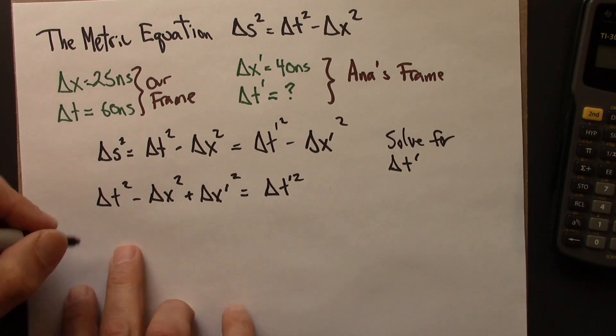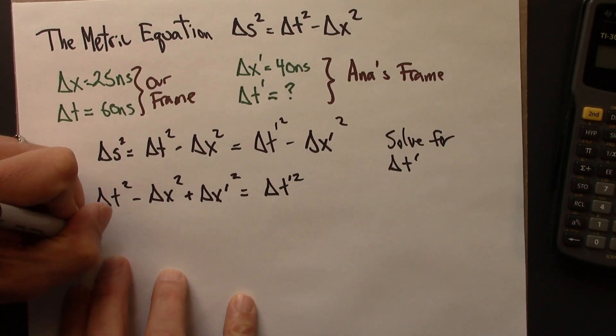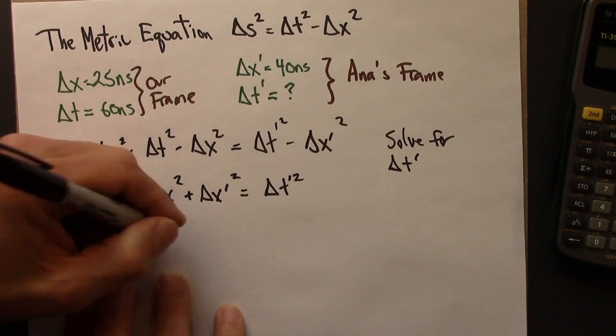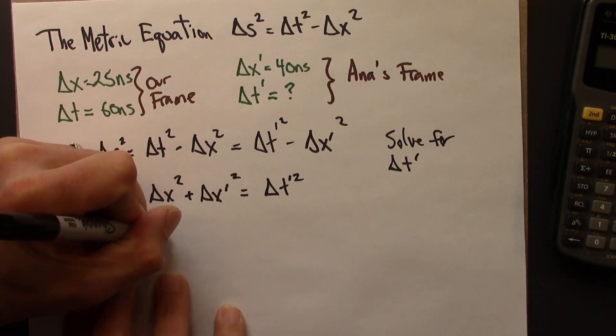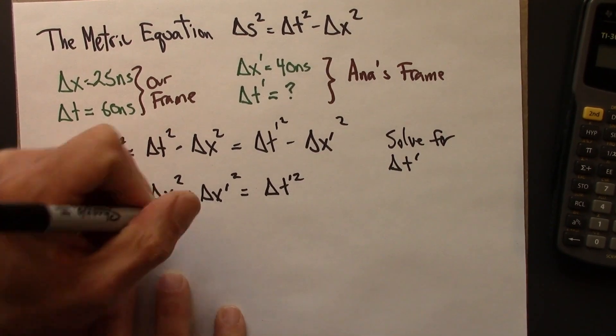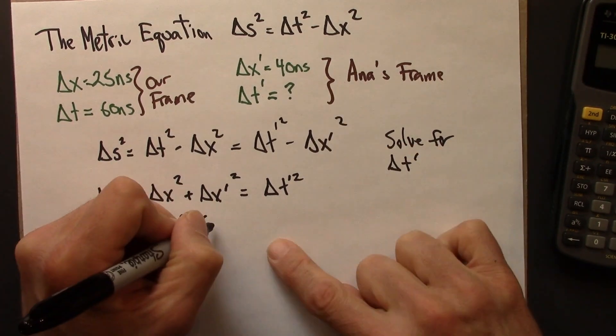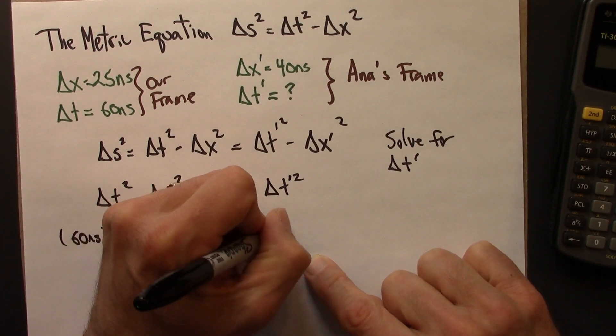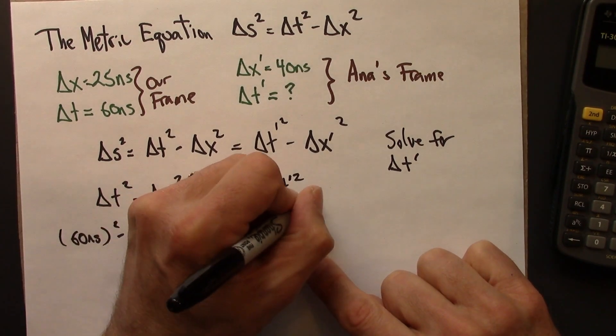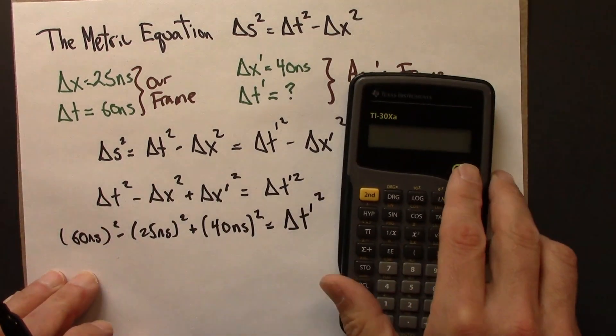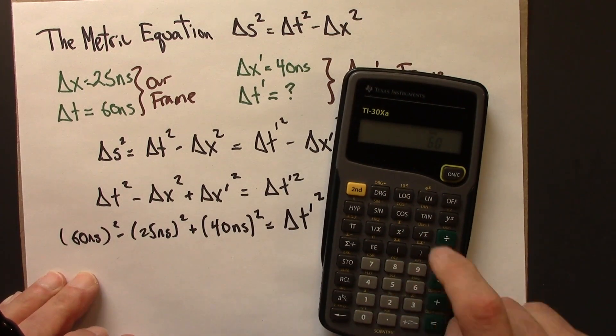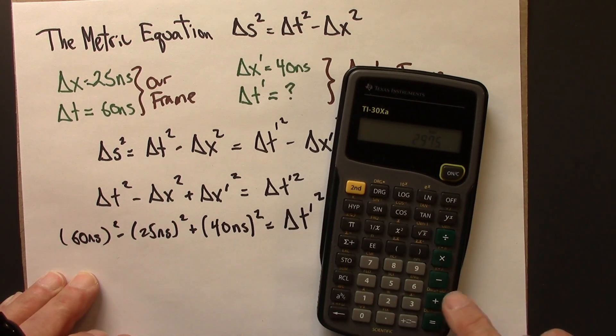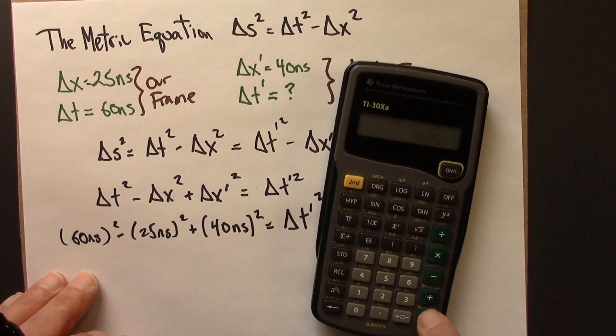Alright, so if I were to do that, I would take 60 nanoseconds squared minus delta x squared, 25 nanoseconds squared plus 40 nanoseconds squared. All right, let's grab a calculator and do that. 60 squared minus 25 squared plus 40 squared equals.